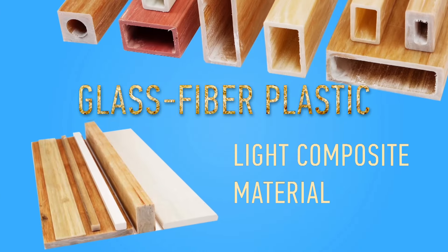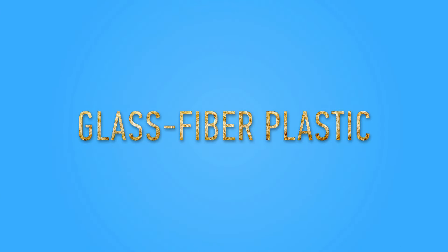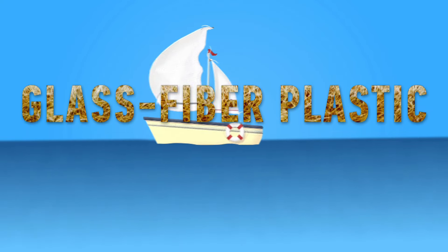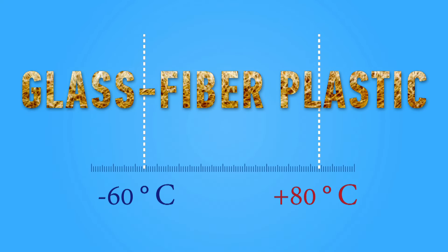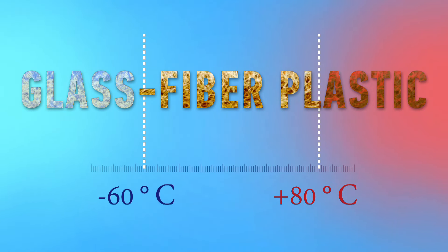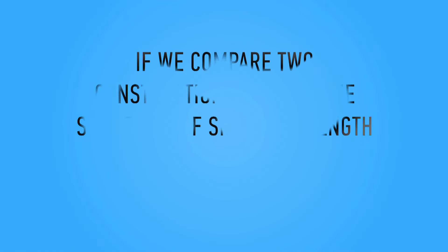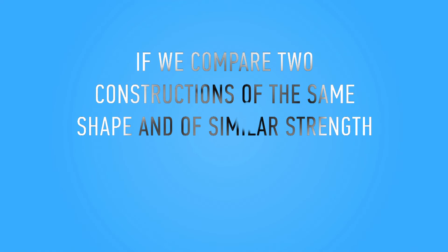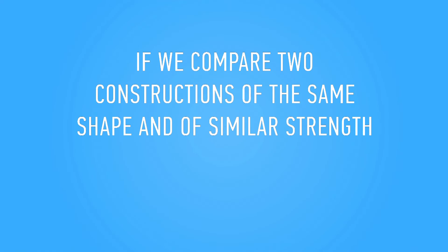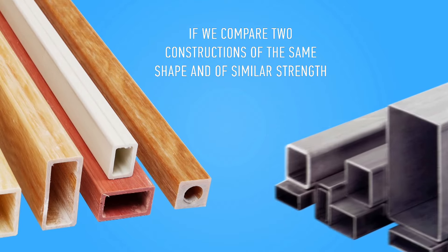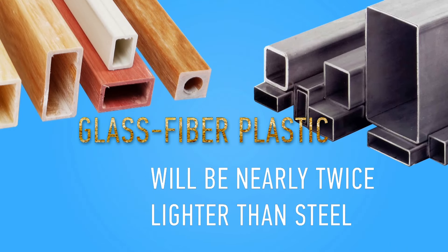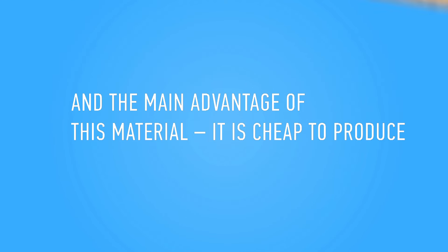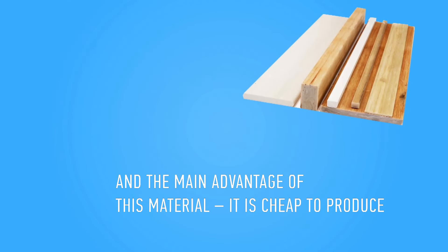Glass fiber plastic is a light composite material — it's corrosion resistant, that's why it's employed to make boats, for example. It withstands temperature fluctuations from minus 60 to plus 80 degrees Celsius, one of the reasons it's suitable for construction. Comparing two structures of the same shape and similar strength, one from glass fiber plastic and one from steel, the first will be nearly twice lighter. And the main advantage is how cheap it is to produce.